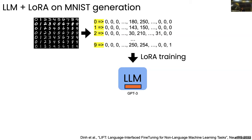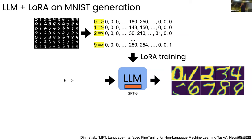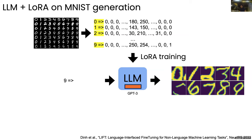If you want to do something even crazier, you can do the reverse: start from the digit label first, then the sequence of pixels, and fine-tune the model that way. At testing time, you give a digit like zero, and the model starts generating a sequence of numbers which you can visualize as an image. You can actually train a pretty reasonable image generator this way — not as good as MNIST GANs, but it still works, which is pretty mind-blowing.